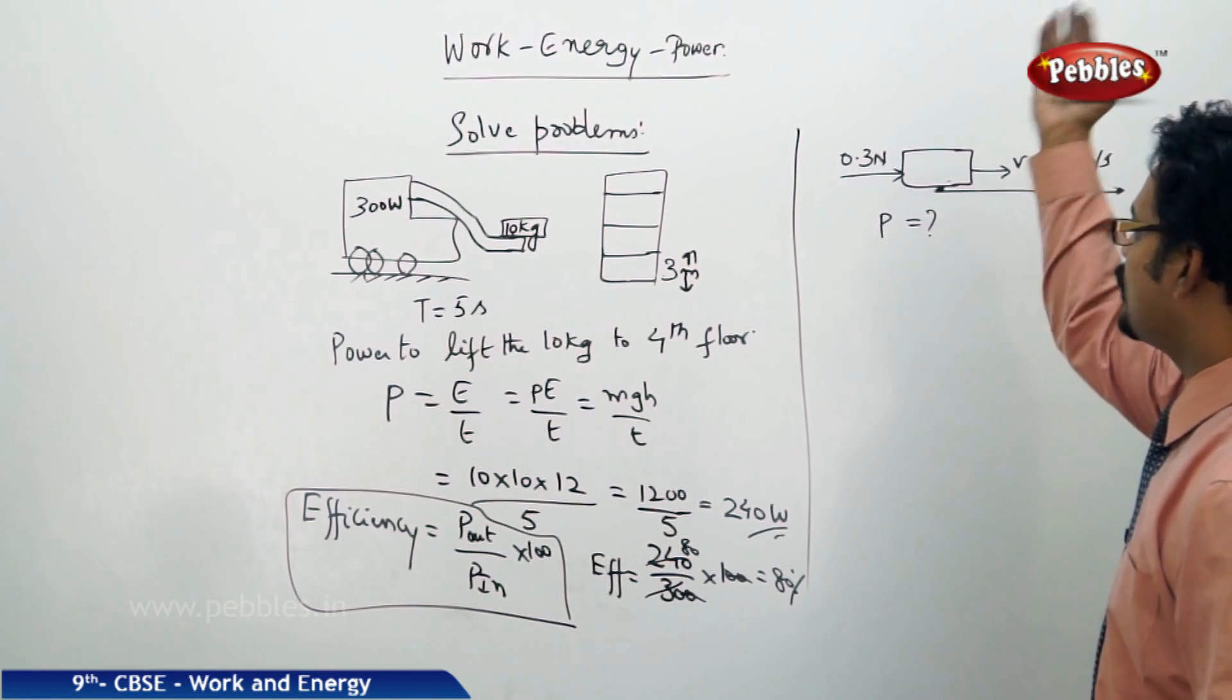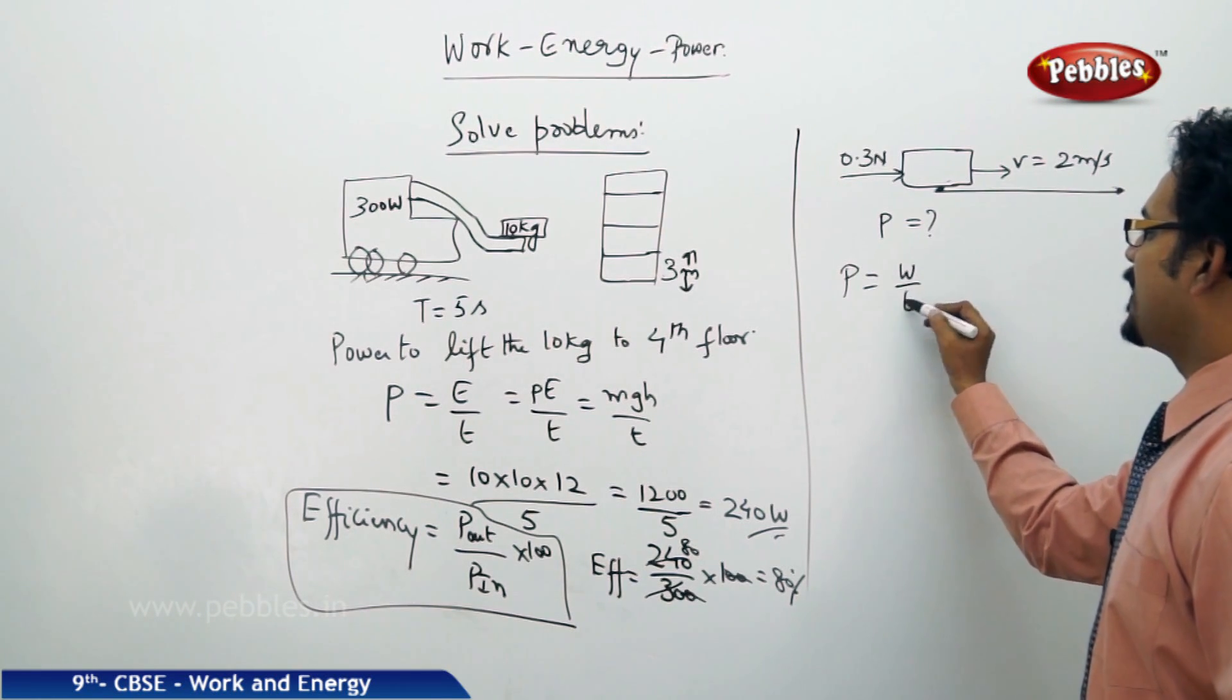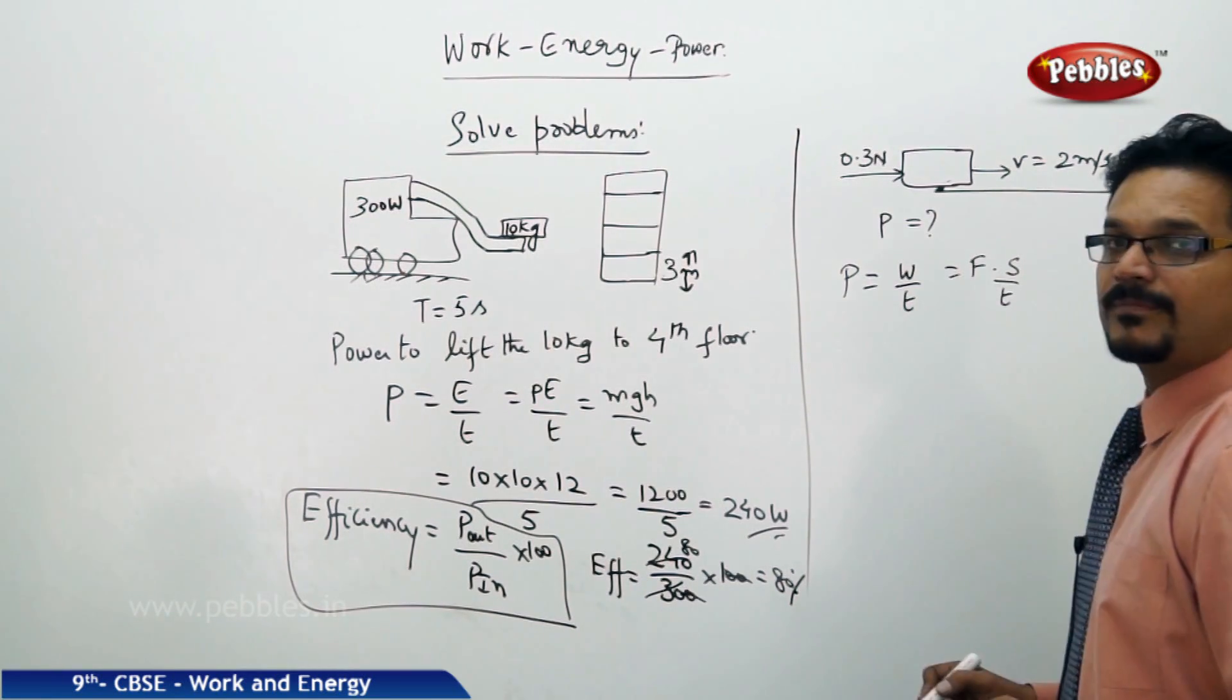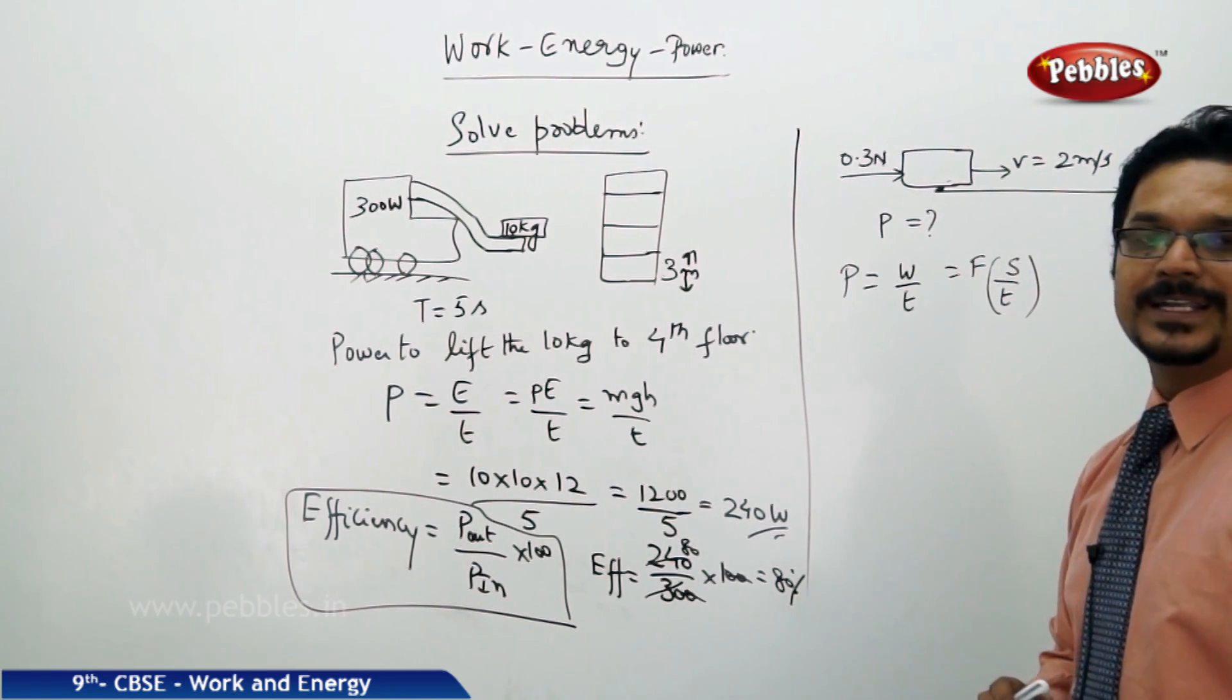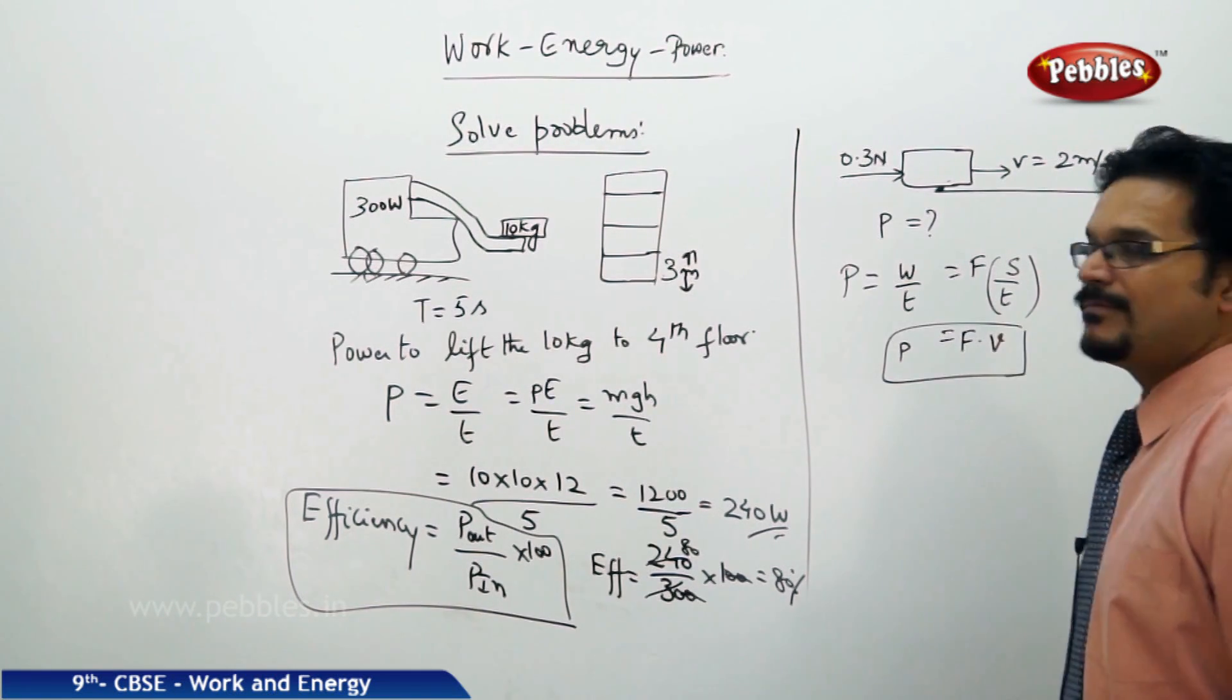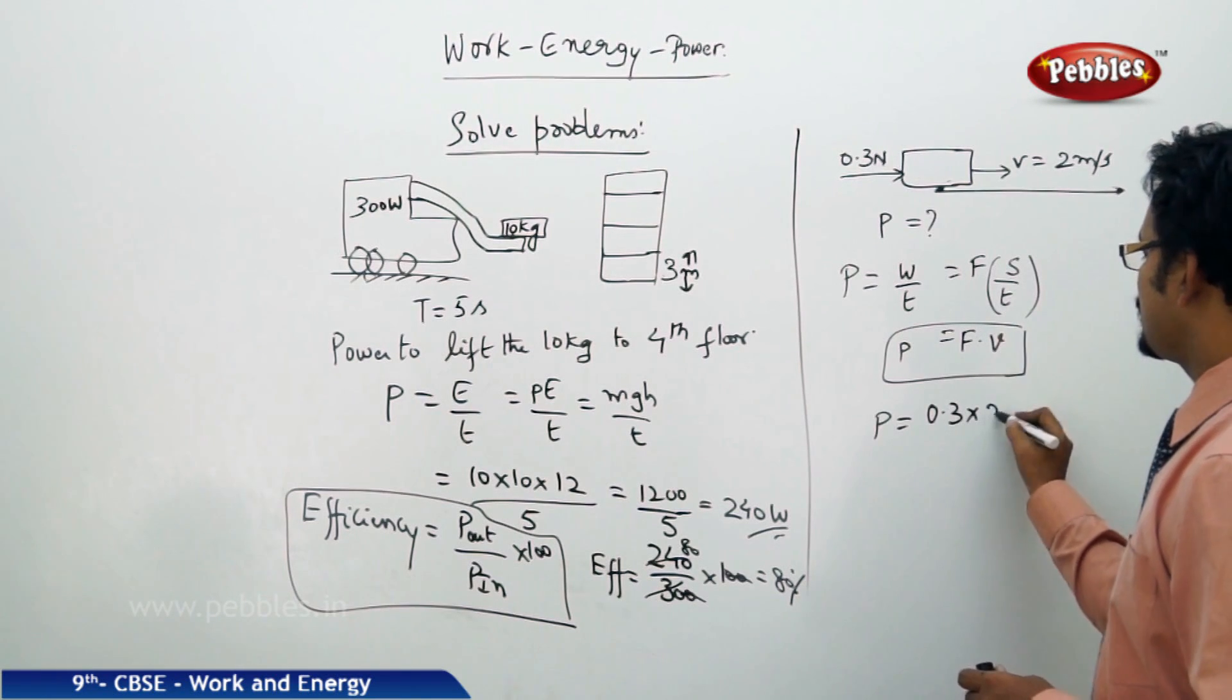Potential energy by time, it is not going up, so potential energy you cannot use. So what to do? Power is energy by time. P equals work by time. Work is also called force into displacement, as we know that, by time. But if you see here, s by t, distance by time or displacement by time, displacement by time is nothing but velocity. So power has another formula: F into V, force into velocity.